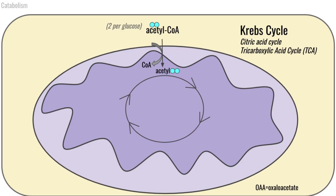Moving on now with our acetyl-CoA, we're going to enter the mitochondrial matrix for another series of reactions. These reactions that take place inside the mitochondrial matrix are called the Krebs cycle. You may have previously heard the Krebs cycle referred to by other names — it can also be called the citric acid cycle or the tricarboxylic acid cycle, abbreviated as TCA. Those are all acceptable names for this pathway. I am going to refer to it as the Krebs cycle.